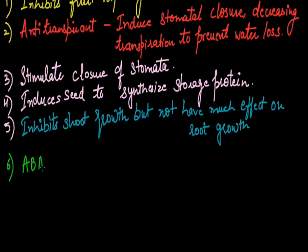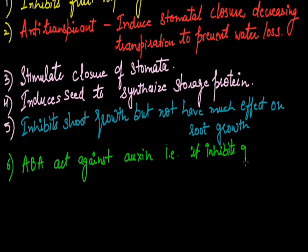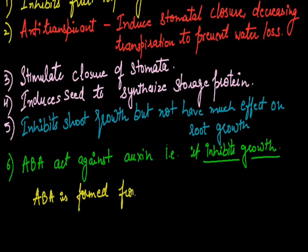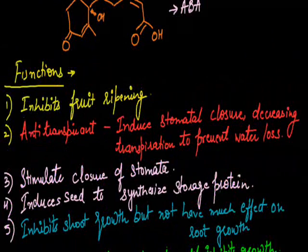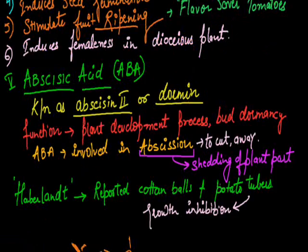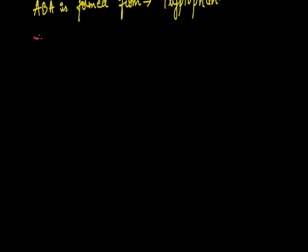ABA acts against auxin, that is, it inhibits growth. ABA is formed from amino acid tryptophan. This is all about the functions of abscisic acid structure. That's about it. Thank you.